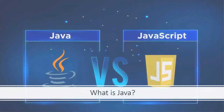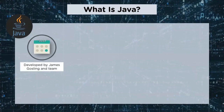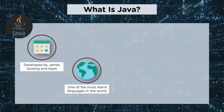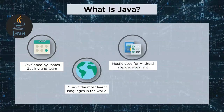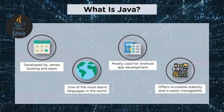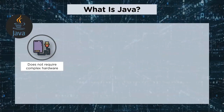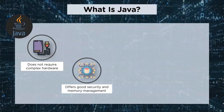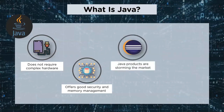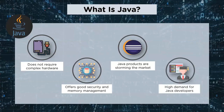First up, what exactly is Java? Java was developed by James Gosling and team. It is the most commonly learned and used programming language across the globe. More than 3 billion mobile phones use Java today. Mostly it is used for Android app development. It offers incredible stability and is easily manageable. Another important feature is that it does not require any complex hardware. It is used in web applications with the help of servlets, struts or JSPs. Java overcomes drawbacks of C and C++ and provides better memory management and security. Java products are storming the market today with over 1 million GitHub repositories, and there is a vast community with high demand for Java developers.